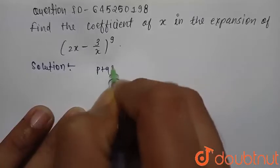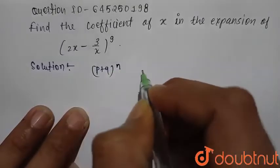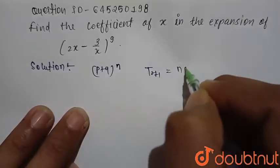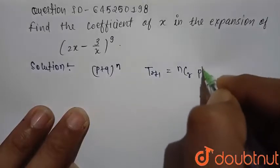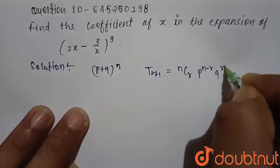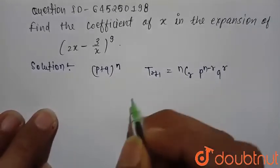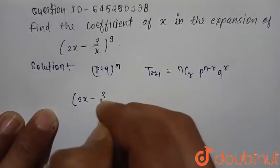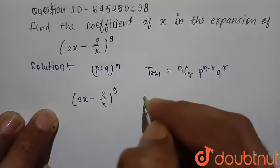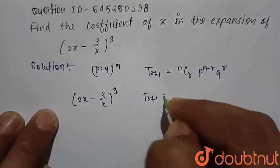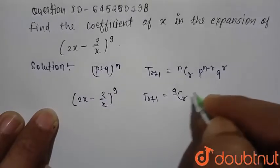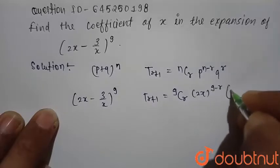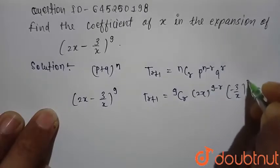First we consider a general binomial expansion, that is (p + q) raised to power 9, and we write the general term of this binomial expansion: T(r+1) = nCr × p^(n−r) × q^r. Using this formula, we write the general term of the expansion (2x − 3/x)^9 as: T(r+1) = 9Cr × (2x)^(9−r) × (−3/x)^r.